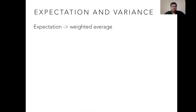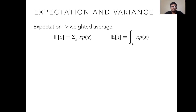Let's discuss about expectation, or weighted average of the sample points. Expectation for discrete random variables can be written as the product of the values that the random variable takes and the probability with which those values are taken, then summed over all points in the sample space. For discrete random variables, p(x) is usually known as the probability mass function. The same formula extends to the continuous case where the summation is replaced by integration, but the basic formula remains the same — you take the product of values and their probabilities and integrate over the entire sample space.